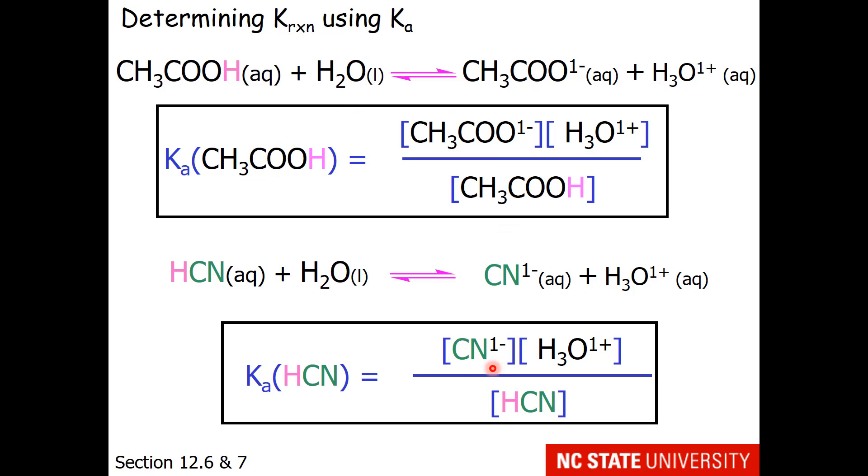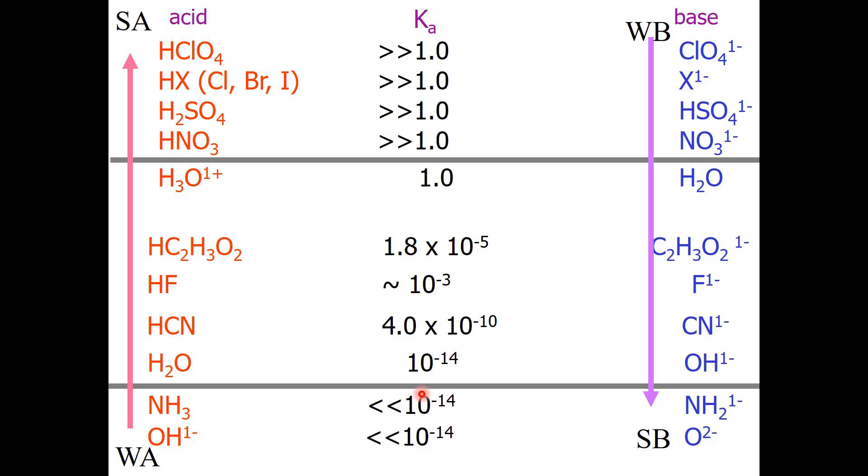Here is just a slide showing you the two Ka expressions and the substitutions that I have used. Now here is a cutout of our acid base table. The Ka of acetic acid versus water is 1.8 times 10 to the minus 5, and for hydrocyanic acid versus water, it is 4 times 10 to the minus 10.